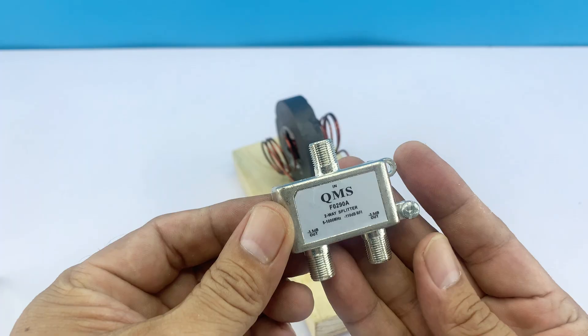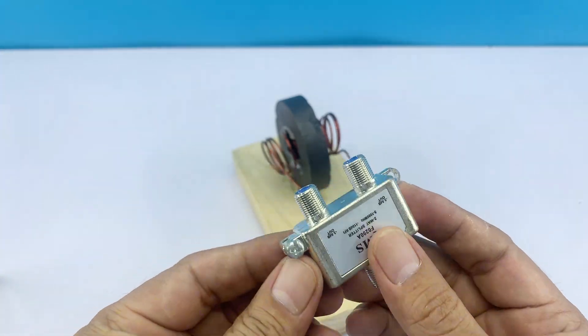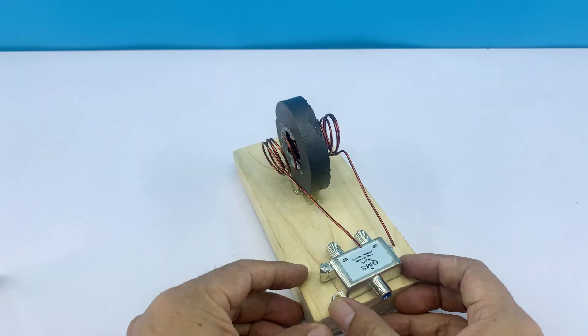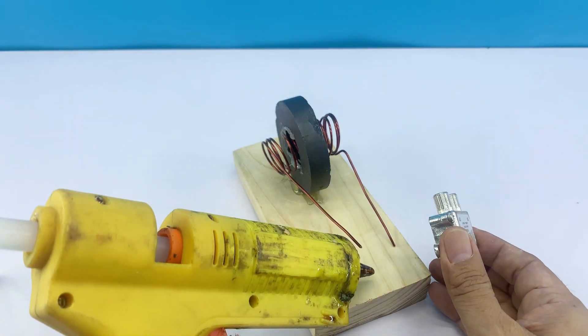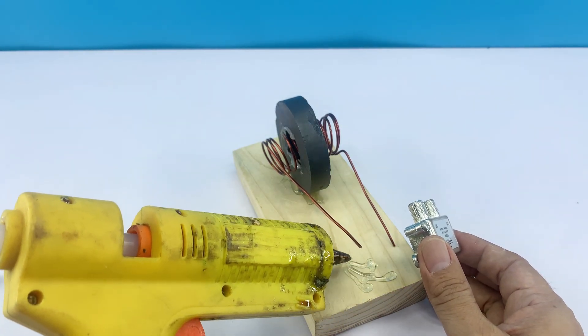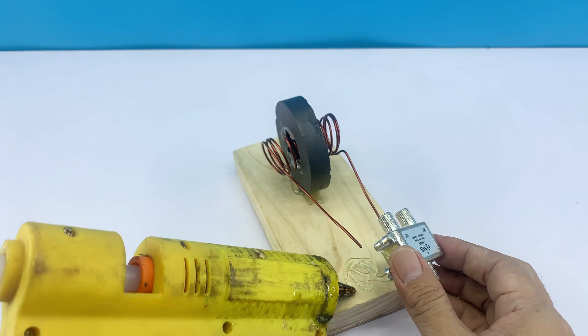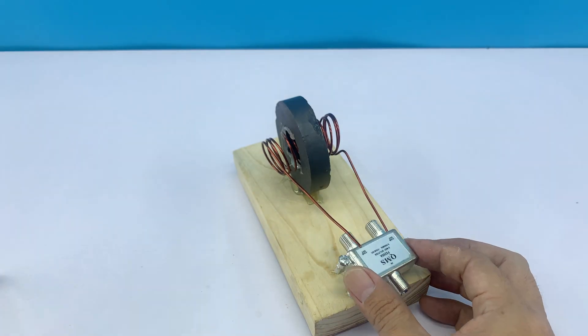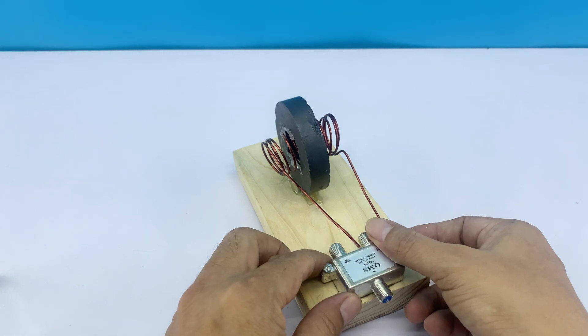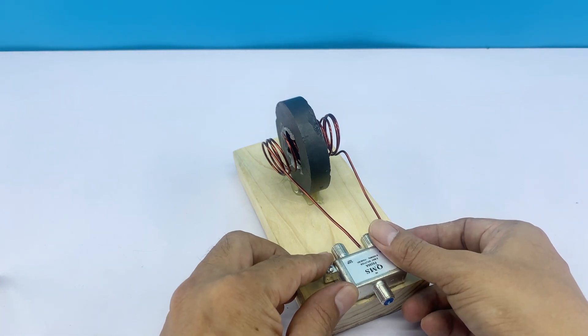In my hand right now is a coaxial splitter. This device is used to divide a single coaxial signal into multiple outputs, allowing us to connect and test several components at once. It's a simple but practical tool that keeps the setup organized while expanding the possibilities for experimentation.